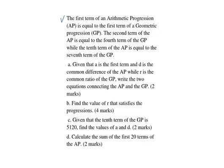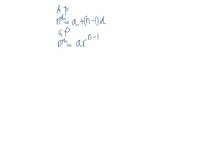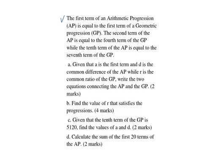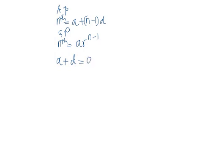With those expressions, we can write two equations connecting the AP and the GP. We are told that the second term of the AP is equal to the fourth term of the GP. So the second term of the AP is A plus (2 minus 1), which is 1 multiplied by D, giving A plus D, equal to the fourth term of the GP: A multiplied by R to the power 4 minus 1, which is 3. Call this equation number 1.